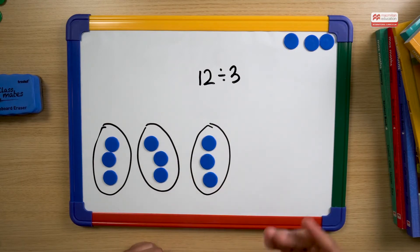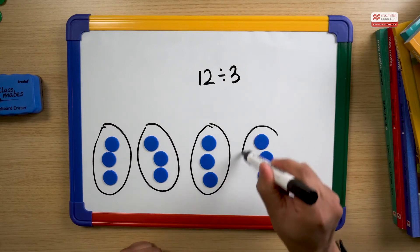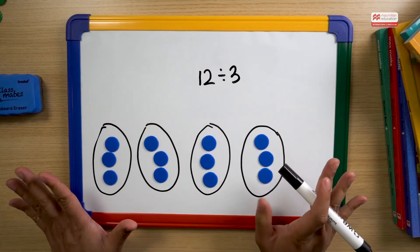And do we have any more? Oh, we've got three more. OK, so we can use that. And we can make another group of three. So have we used all our 12 counters? Oh, we've put them all into groups of threes. Perfect.